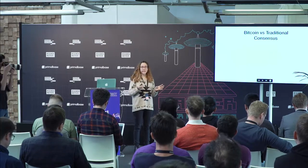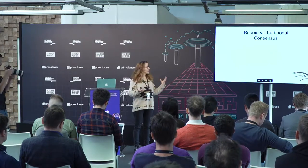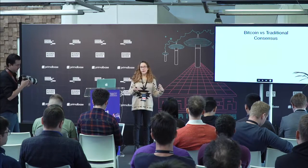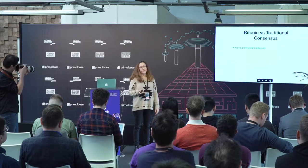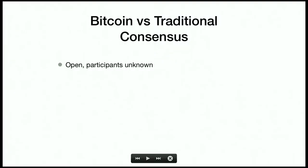As a quick intro, let's recall the differences between Bitcoin and traditional consensus protocols. Bitcoin is completely open — participants can join or leave the protocol and we don't even need to know who they are. That's completely decentralized and open. This is opposed to traditional consensus protocols where you need a fixed, known number of participants in advance — a very big difference.